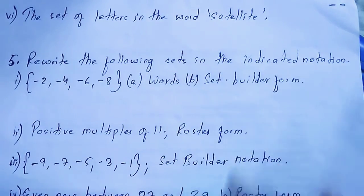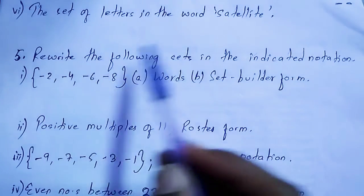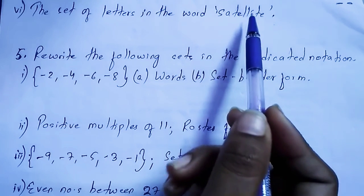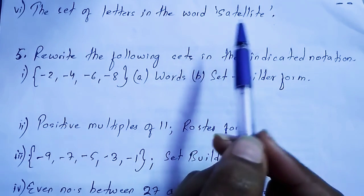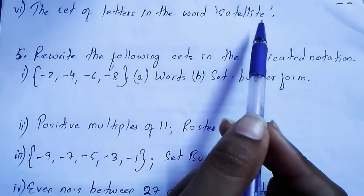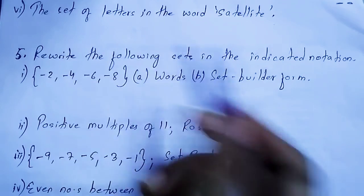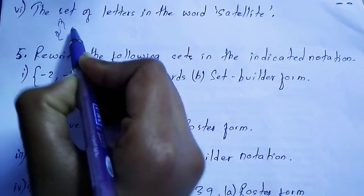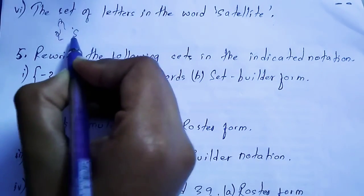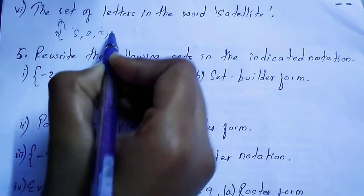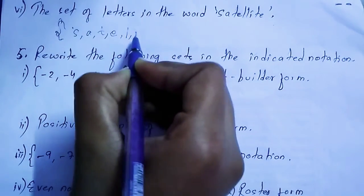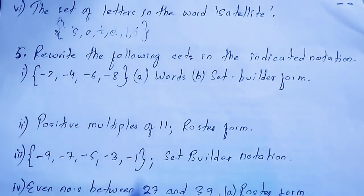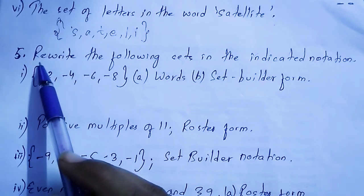Question 6: the set of letters in the word SATELLITE. Repeated letters are written only once in a set. The letters are S, A, T, E, L, I — T, E, and L are repeated but we don't write them again. So the answer is {S, A, T, E, L, I}.